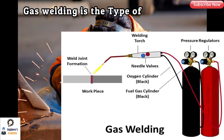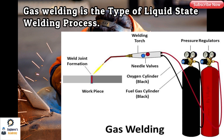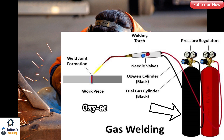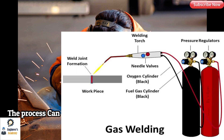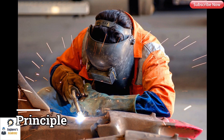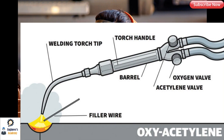Gas welding is a type of liquid state welding process in which fuel gases burn to generate heat. This heat is used to melt the interface surfaces of welding plates, which are held together to form a joint. In this process, mostly oxyacetylene gas is used as fuel gas. This process can be done with or without the help of filler material.